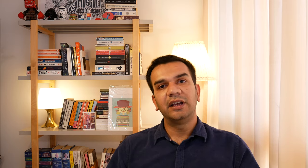When market penetration is expressed as a percentage, it is called the market penetration rate. The same is true for brand penetration and market potential — when expressed as a percentage, it is called the brand penetration rate or the market potential rate. Let's look at an example to understand these different terms a little better.